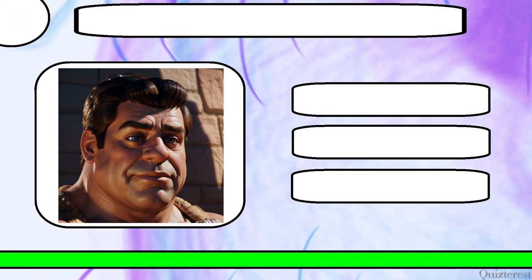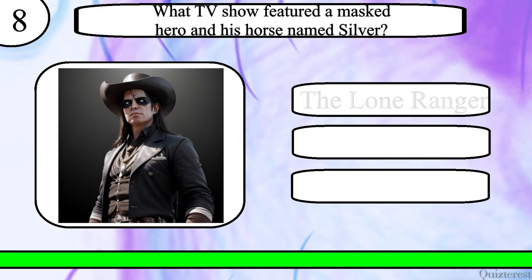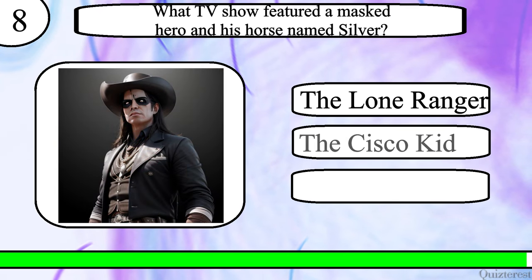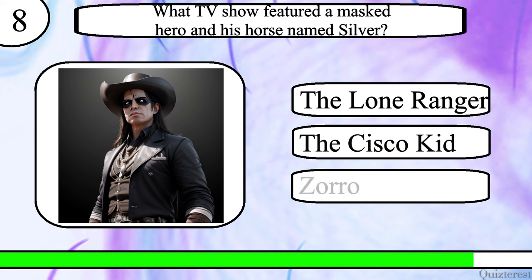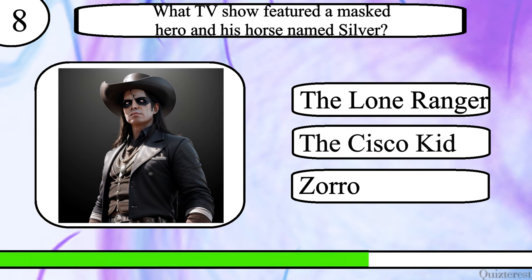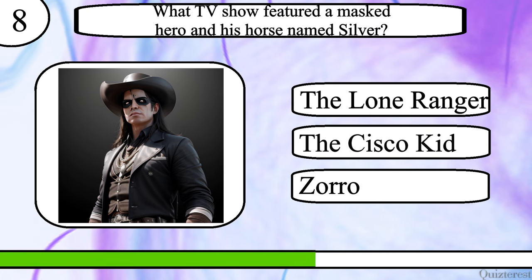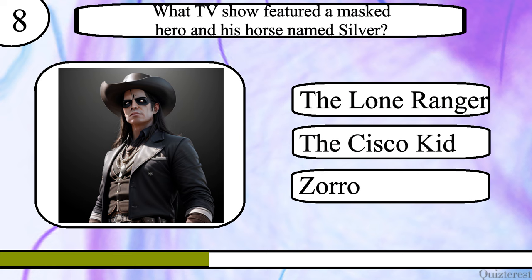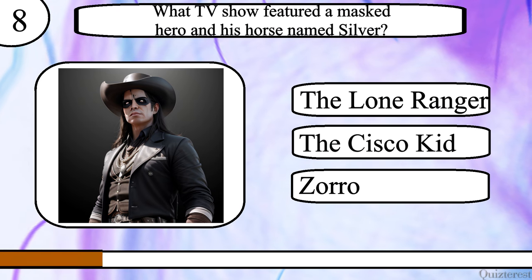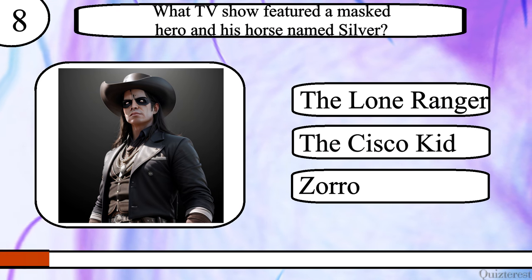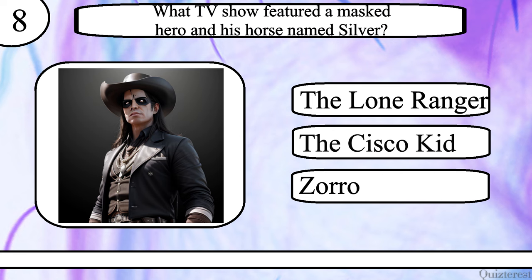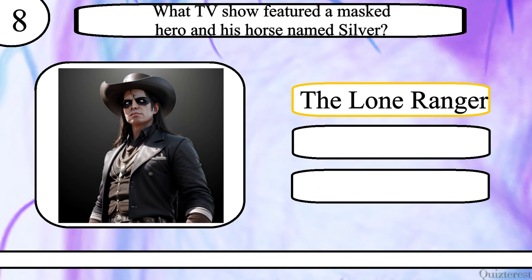Question 8. What TV show featured a masked hero and his horse named Silver? The Lone Ranger, The Cisco Kid or Zorro? The correct answer is The Lone Ranger.